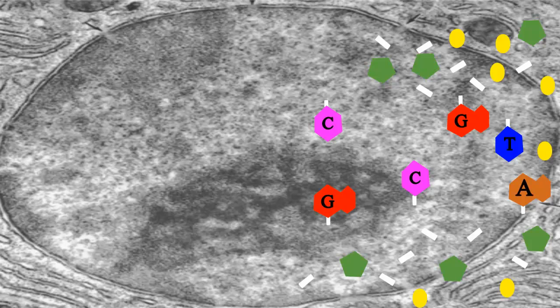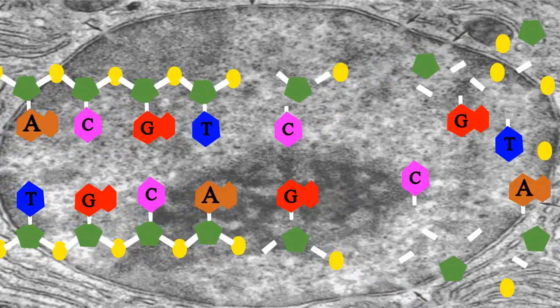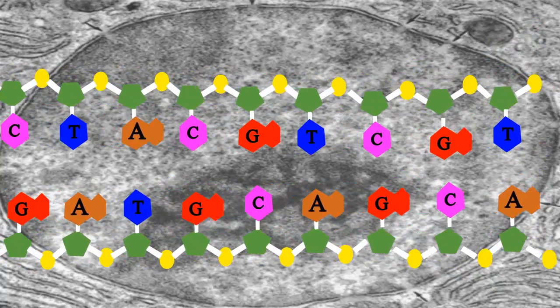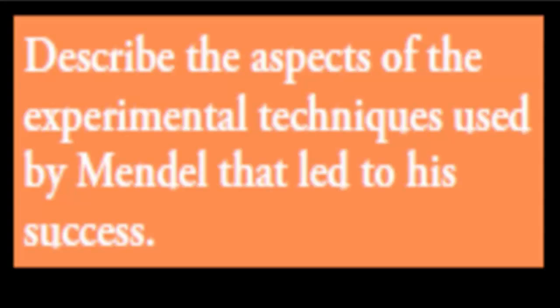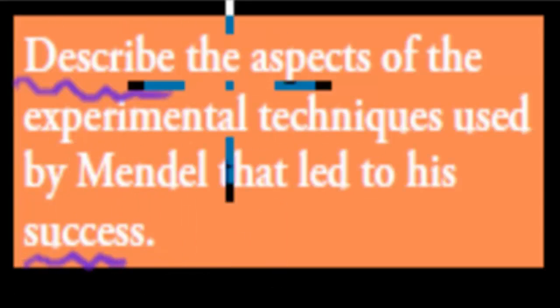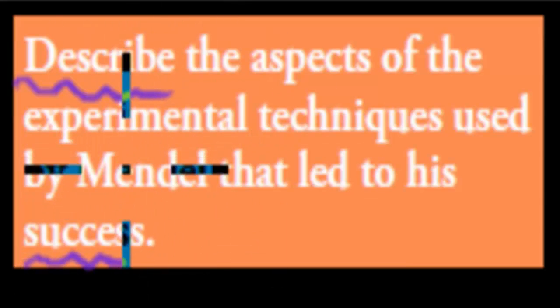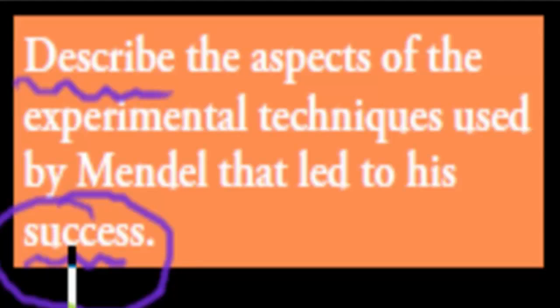Hip hip hooray for DNA, it provides the key to the plans for making everything in you and me. Welcome back. In the last video we talked about Gregor Mendel's experiments, his results, and explained those results using Mendel's law of dominance and segregation. What we're going to do in this video is describe the aspects of experimental techniques used by Mendel that led to his success — naming the actual aspects, describing what they were, and relating that back to how they made his experiment well-designed.